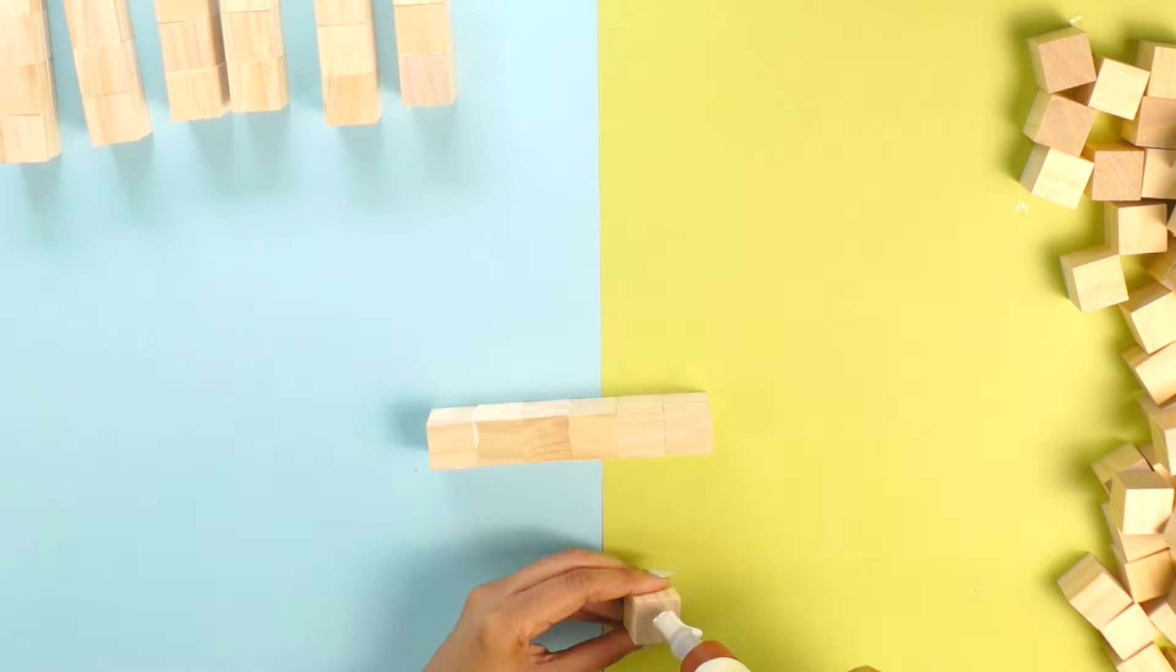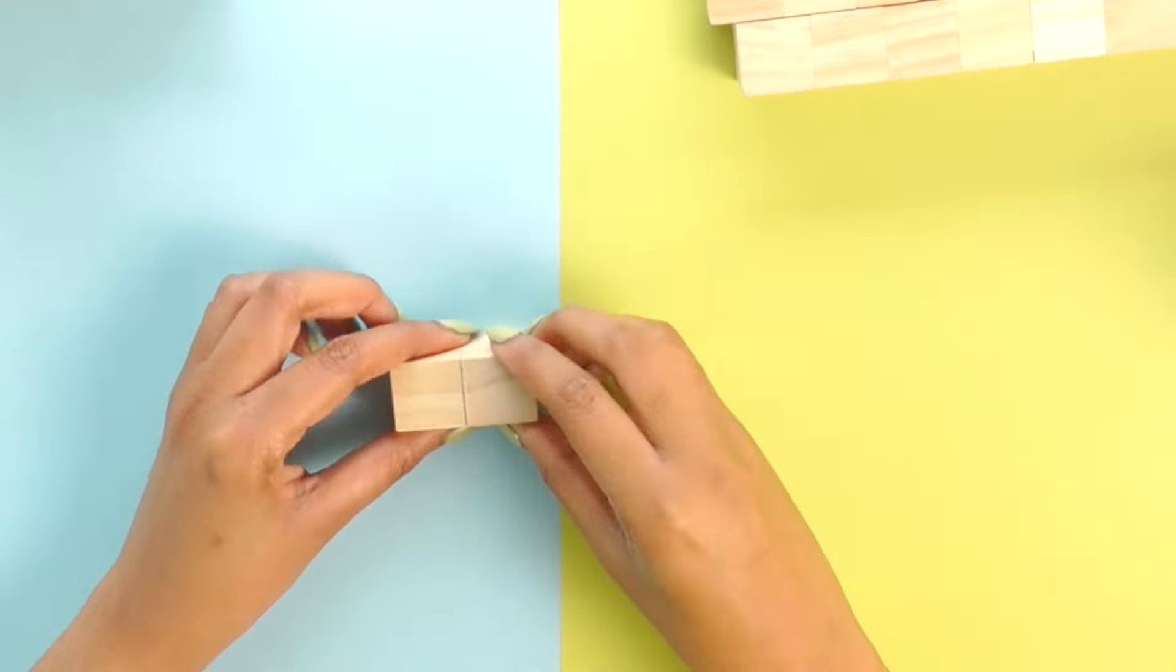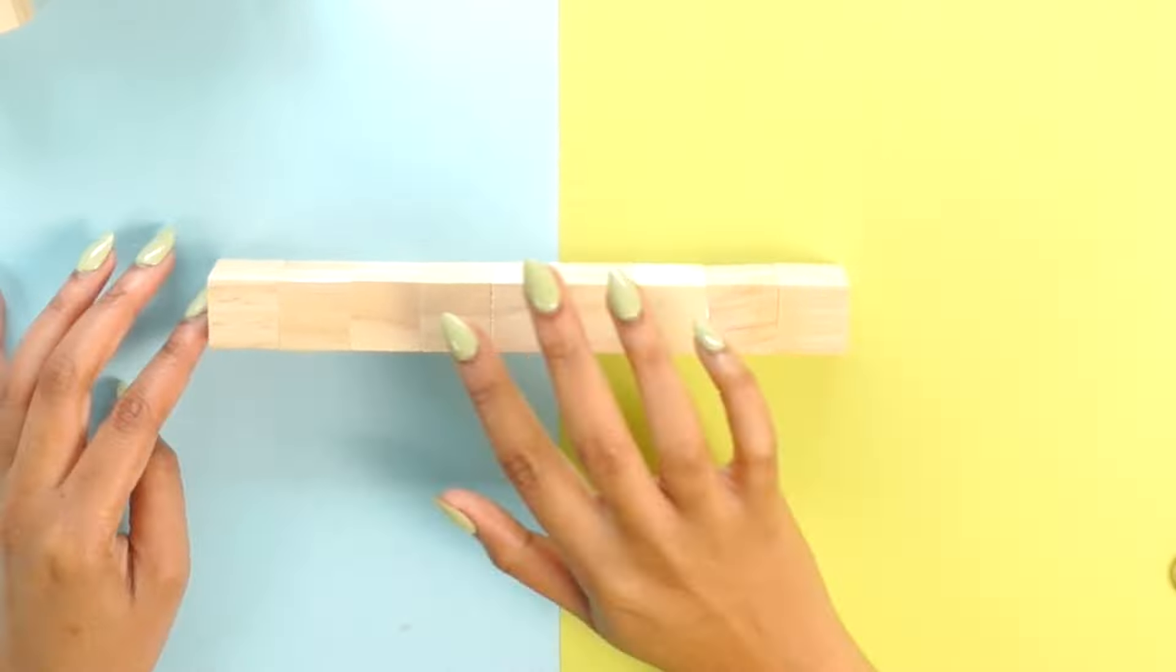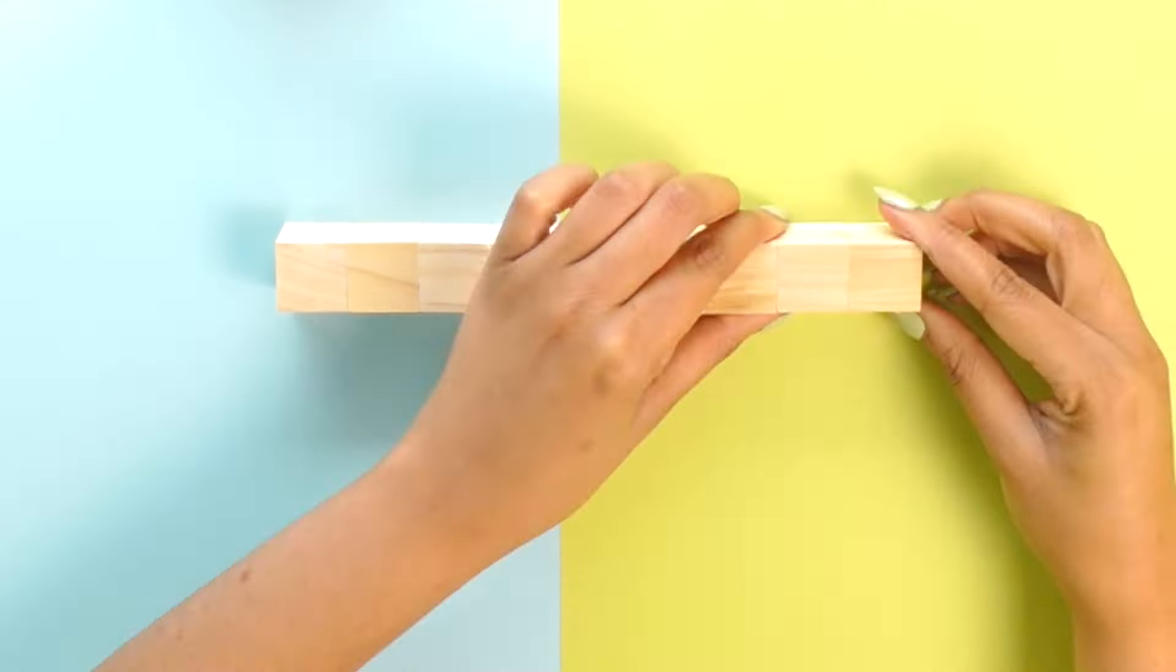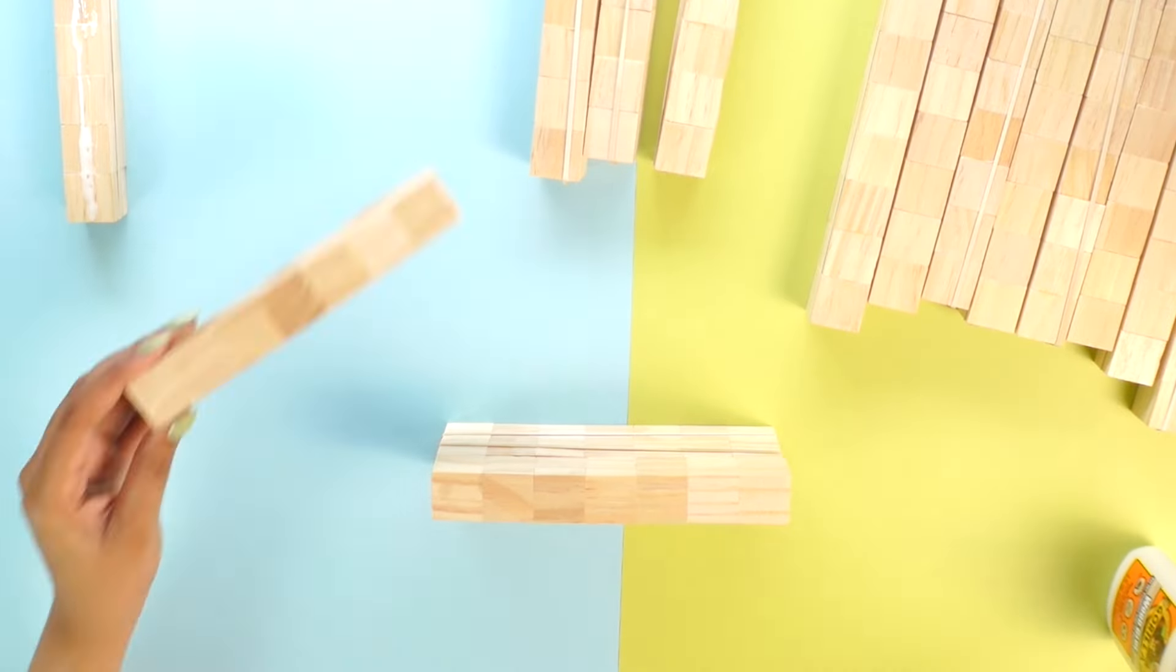One thing that really bothered me about these blocks last time is that they weren't even at all. I tried really hard to make them even, sanded them down, chose the ones that were most even, and it still didn't look very good. So this time around I didn't even bother to check. I feel like the only way to get real perfect cubes every time is to maybe have them 3D printed, so I'll settle for wood.